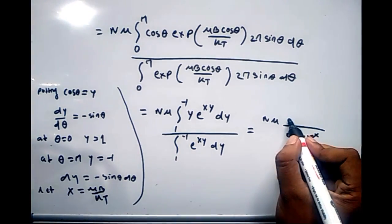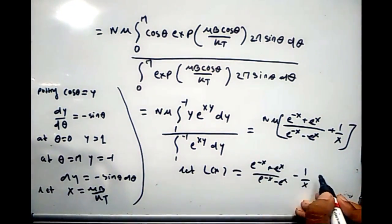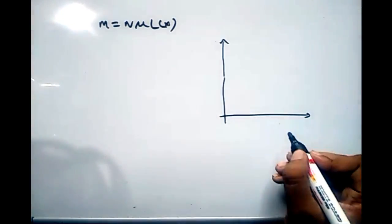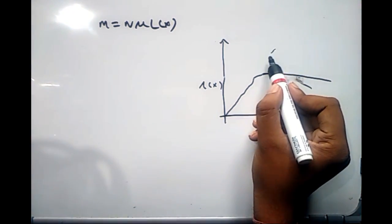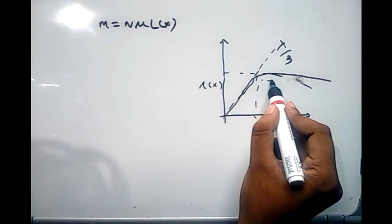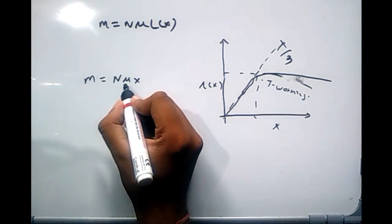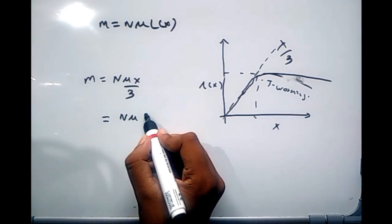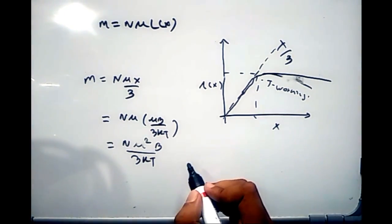After performing the integration with the substitution, the magnetization becomes M = nμ · L(x), where L(x) is the Langevin function: L(x) = (e^x + e^(−x))/(e^x − e^(−x)) − 1/x. If we plot L(x), at our working temperature x/3 is a tangent to the curve, meaning we can approximate L(x) ≈ x/3. Substituting back, M = nμ · (x/3) = nμ · (μB/3kT) = nμ²B/3kT.